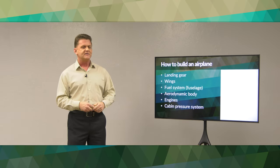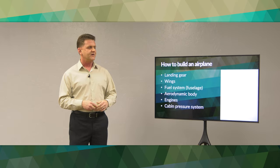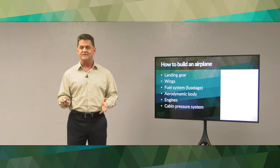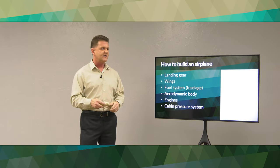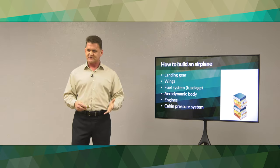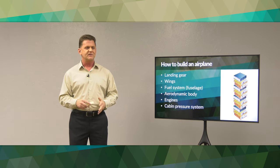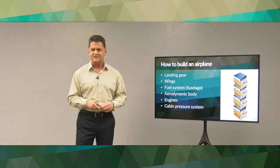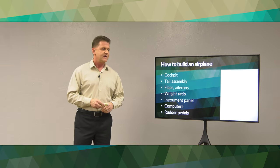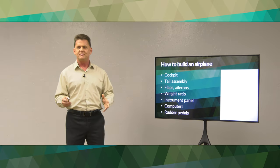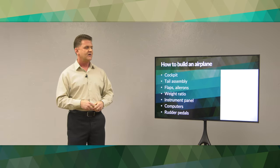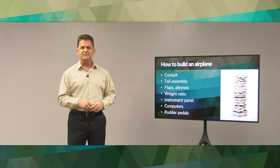We've talked about the wings, landing gear, engines, and the cabin pressure system — very important, because as you increase in altitude you go into lower pressure, so you need more internal pressure. We need instructions for these. Now from just this short list, we're going to have a pretty impressive set of manuals. Then there's the tail assembly, the flaps, the ailerons, the weight ratio — extremely important if you're going to get a heavy piece of machinery off the ground. Rudder pedals — another stack of manuals.